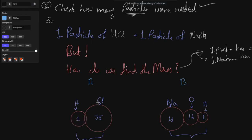In chlorine I have 35 atomic mass units, in sodium I have 11, in oxygen I have 16, and in hydrogen I again have one atomic mass unit. This is essentially saying that the total sum of protons and neutrons gives: hydrogen = 1, chlorine = 35, sodium = 11, oxygen = 16. Now we need to somehow convert these into mass.